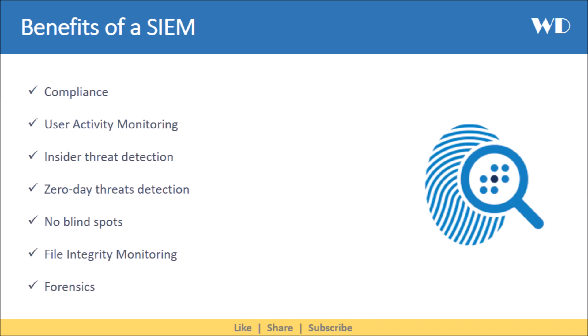Key benefits of SIEM are that it helps with compliance requirements like HIPAA, PCI DSS, GDPR, etc. It helps in user activity monitoring, as you are able to scan all endpoints continuously. It helps in insider threat detection by applying user and entity behavior analytics. SIEM security helps identify zero-day threats by detecting behavior associated with attacks which are even unknown to the manufacturer. It also helps eliminate blind spots in your network, assists with file integrity monitoring, and helps prevent confidential data loss. SIEM helps in forensics as it saves and keeps track of all logs and network events.